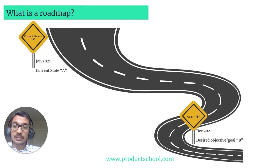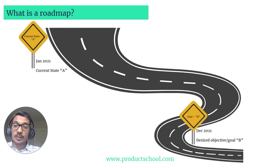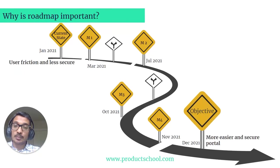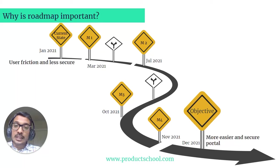A roadmap gives a clear path on how you will reach the goal or objective from the current state in a given time frame. In this example, the current state is A and the goal is B, and the roadmap shows a path from A to B for a given time frame of one year. The roadmap is like an anchor for product development.